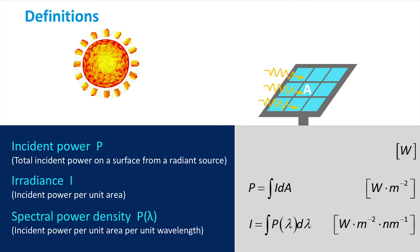We just discussed that blue photons are more energetic than red photons. Furthermore, not all photon wavelengths are emitted equally by the sun. We are therefore interested in the power per unit wavelength.